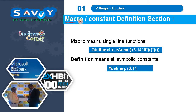Macro means single-line functions. Constants means the value will not change — it allocates memory and the value remains fixed throughout the entire program. Macros can be defined using hash define, and constants can also be defined with hash define. For example, for circular area we can define pi as 3.14 using this syntax.